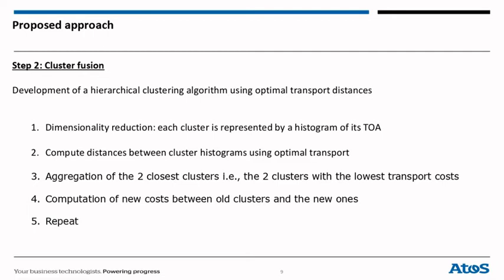Secondly, we compute distances between cluster histograms using optimal transport. Thirdly, the two closest clusters are aggregated by using the lowest transport cost. Fourthly, distances are updated. And then these tests are repeated until a single cluster is obtained.